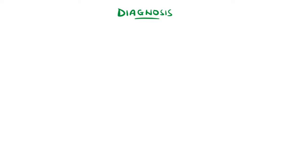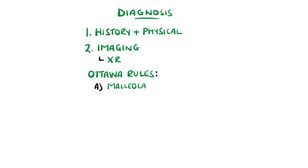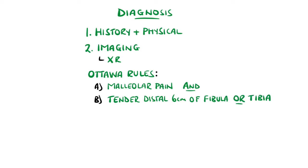A combination of the history, physical exam, and imaging is used for diagnosis, most commonly x-rays. Since most ankle injuries do not involve fractures, the Ottawa rules for ankle x-rays are used to estimate if a fracture is likely and therefore if an x-ray is indicated. These are: pain on any malleolar zone and tenderness on the distal 6cm of the tibia or fibula, or if the patient is unable to bear weight immediately after the injury and in the consultation for at least 4 steps.